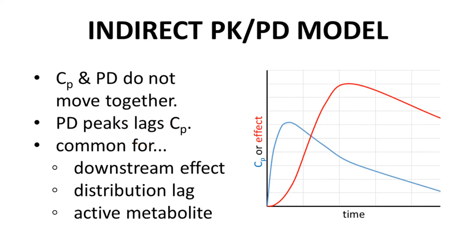Sometimes people call the indirect model the delayed PKPD model. Many drugs follow the indirect model because they act on a target far upstream of the response event in a biological pathway — for example, a drug that affects gene expression. Some drugs have a distribution lag, and CP, or plasma concentration, is not predictive of drug concentration at the target. Some drugs form active metabolites, so CP of the parent drug may not accurately relate to the effect from all biologically active compounds.